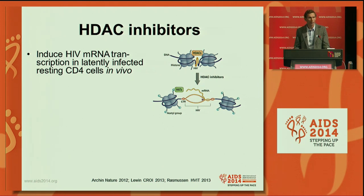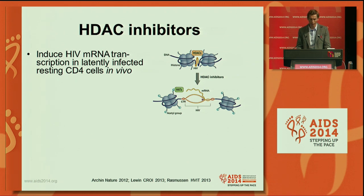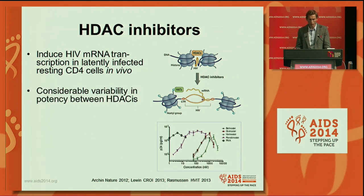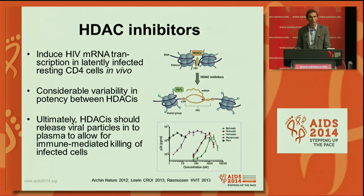HDAC inhibitors have been the most well-investigated group of compounds in this context. They are well known to induce HIV mRNA transcription in latently infected resting CD4 T cells in vivo as well as ex vivo. It has also been shown by several groups that the potency in reversing or turning on transcription is quite variable from one HDAC inhibitor to another.